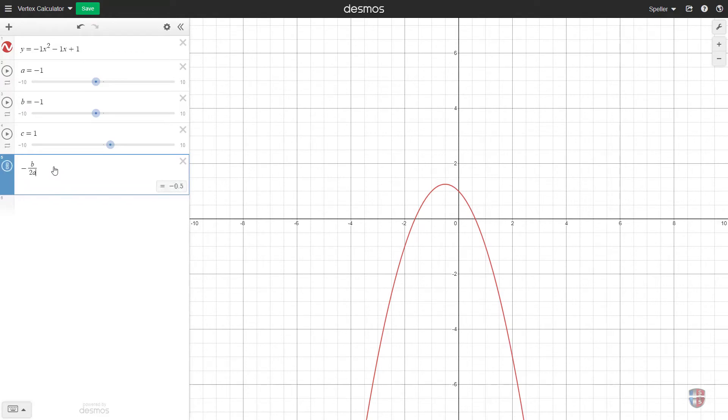And what Desmos does is use these variables here, a negative 1 and b negative 1, and use it in this expression to create the x value. And we see the x value is negative 0.5, which is what we see when we actually click on the graph.